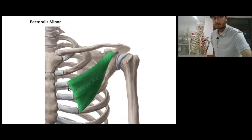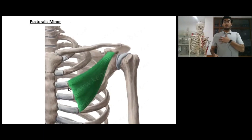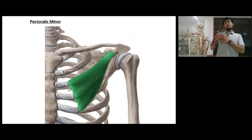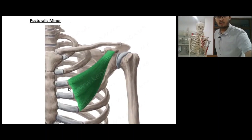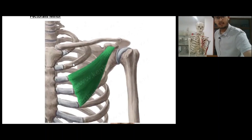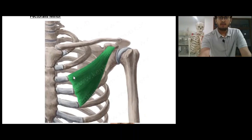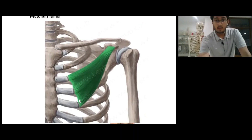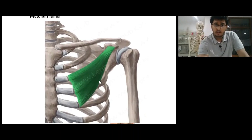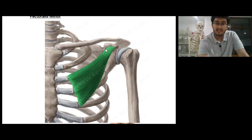As we go downwards, we have another muscle: pectoralis minor. If pectoralis major was the anterior-most muscle, pectoralis minor is just posterior to pectoralis major. Its origin is coming from the third, fourth, and fifth ribs. And it's actually inserting at the coracoid process of the scapula.